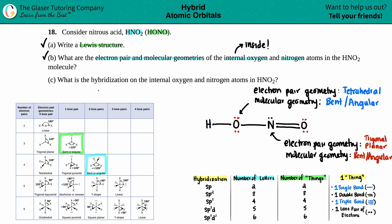Now letter C says, what is the hybridization on the internal oxygen and the nitrogen atom? Okay. Now this is coming down to here. This is what we need to know down here. Hybridization.